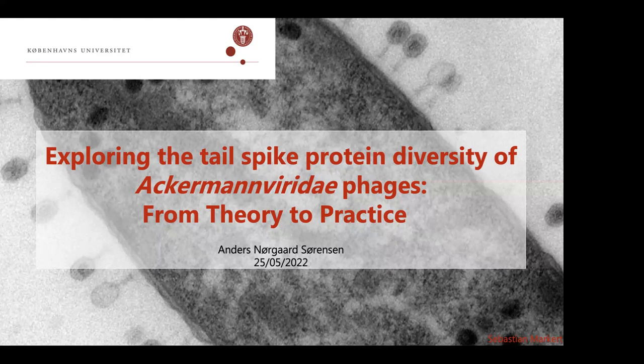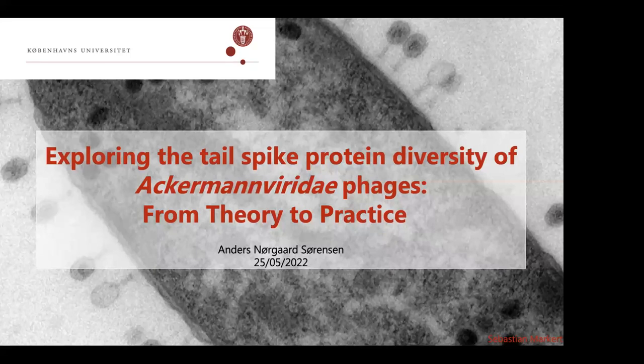The study found that these phages express a large pool of diverse tail spikes that match diverse O-antigens expressed in Enterobacteriaceae species that the phages recognize. Furthermore, the study showed that based on in silico analysis and experimental results, the host recognition could be predicted for numerous uncharacterized phages. This study, entitled 'Subtypes of Tail Spike Proteins Predicts the Host Range of Ackermannviridae Phages,' was published in the Computational and Structural Biotechnology Journal.